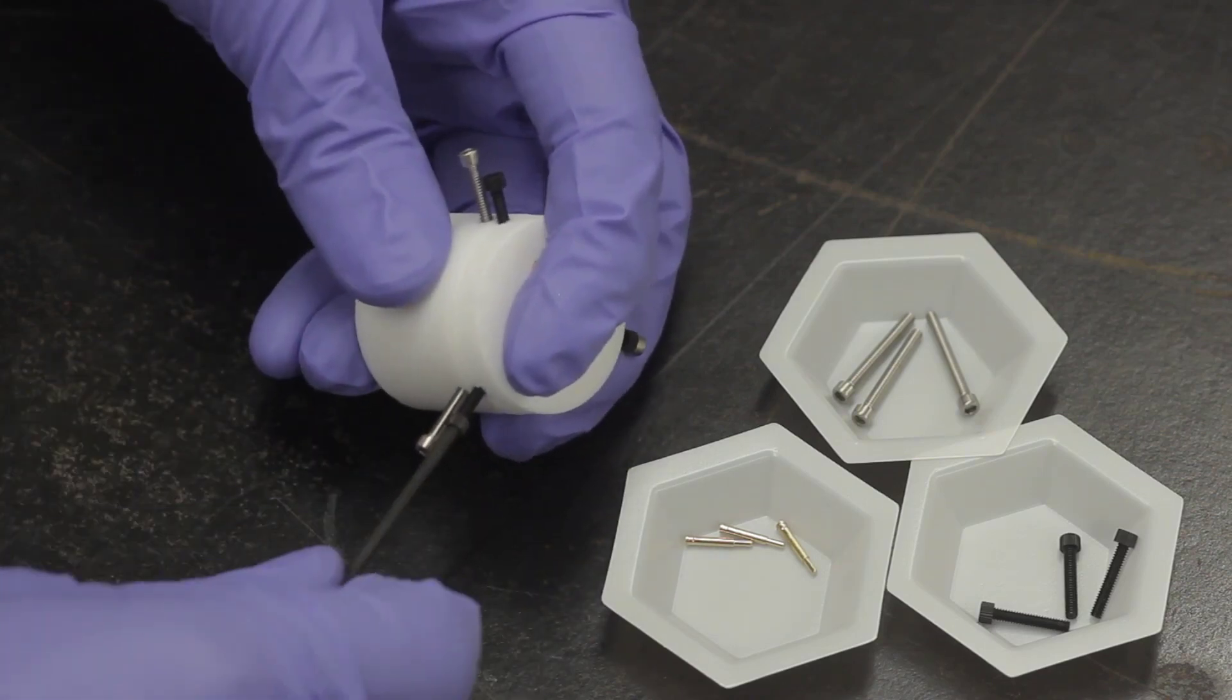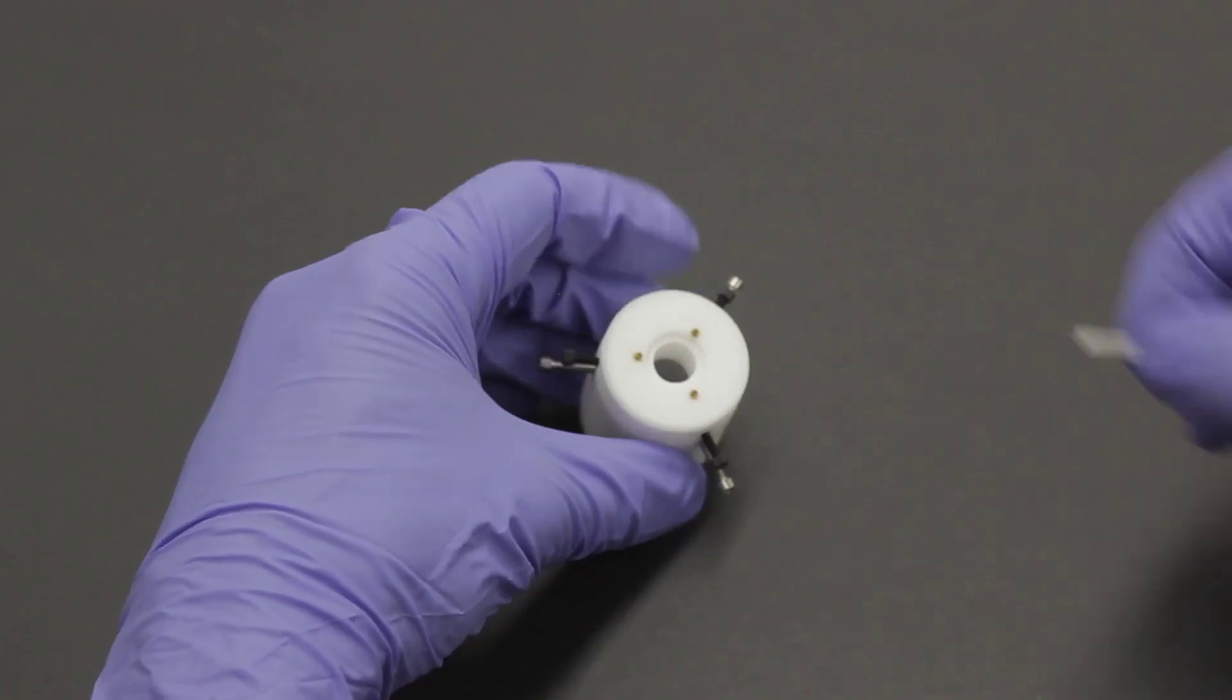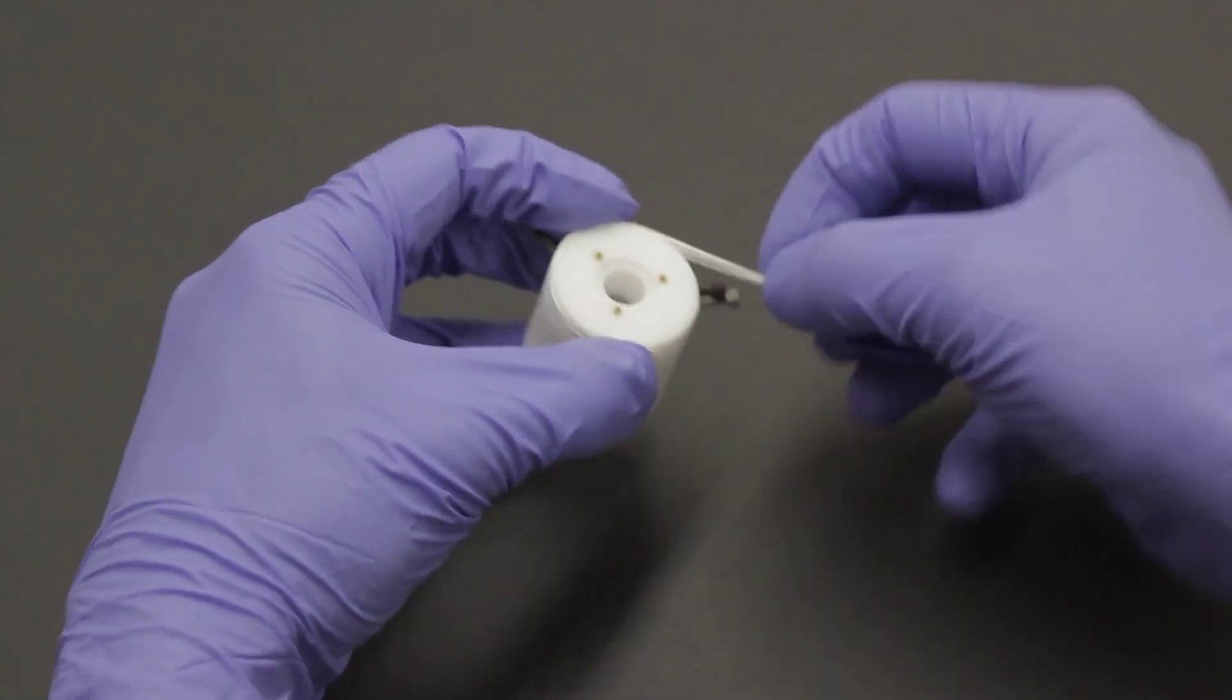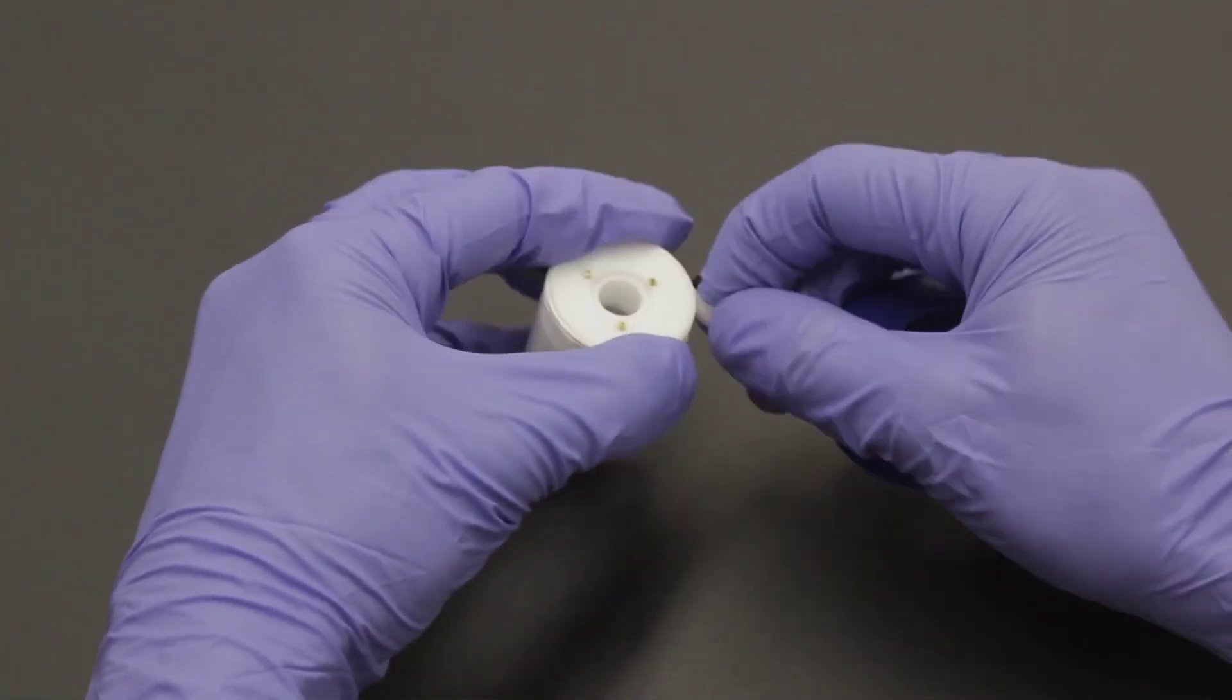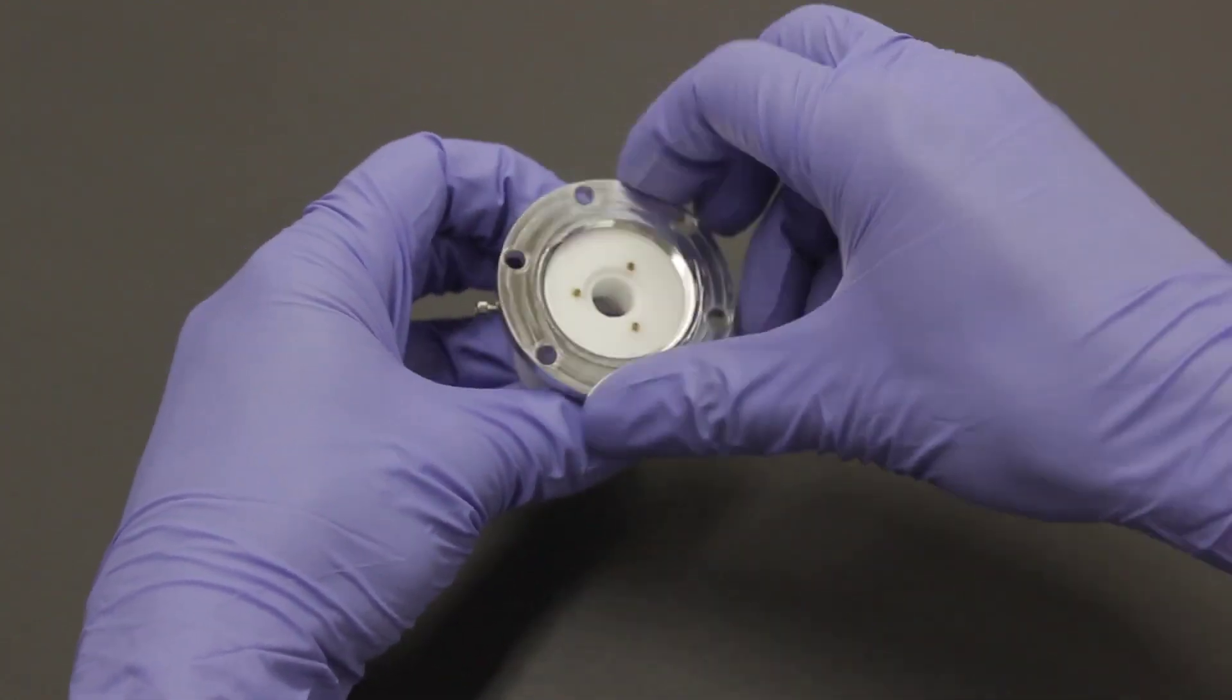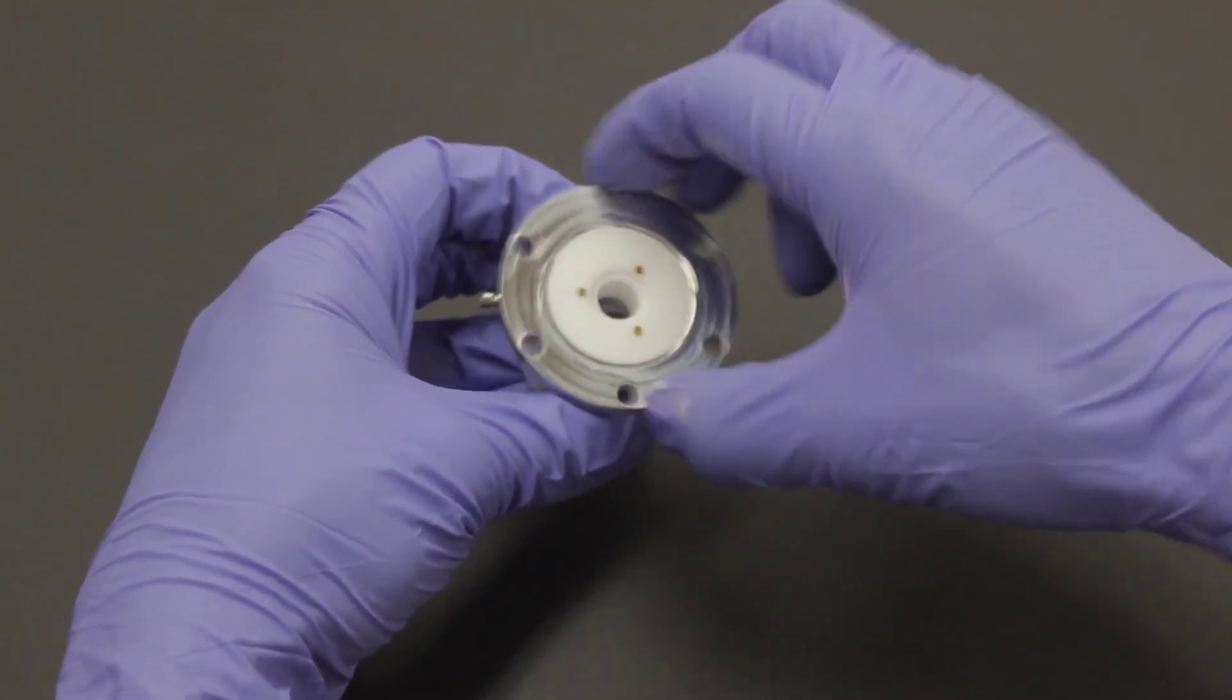The next step is to install the aluminum flange. If you like, you may install PTFE tape on the threads to provide some resistance against loosening. If you choose to use PTFE tape, wrap it around the threads in a clockwise direction as viewed from the bottom of the cell base.